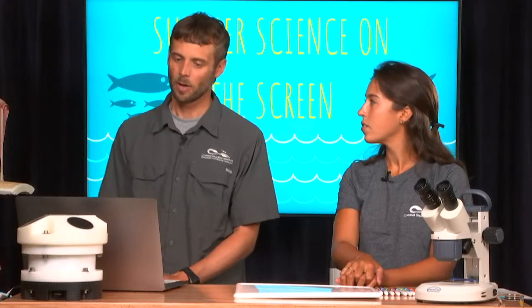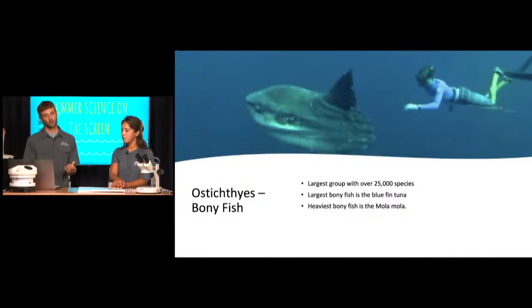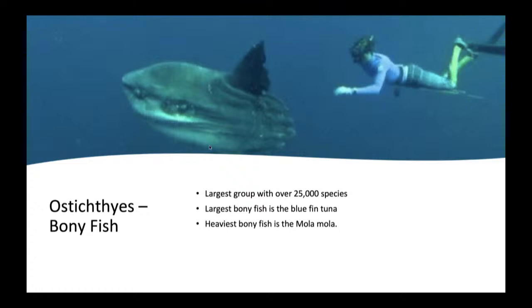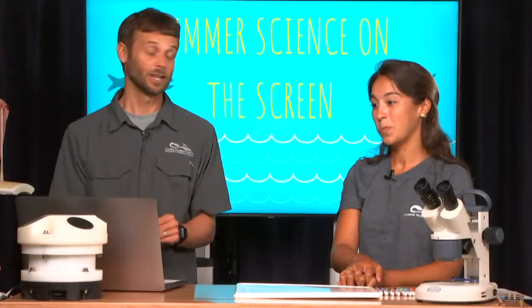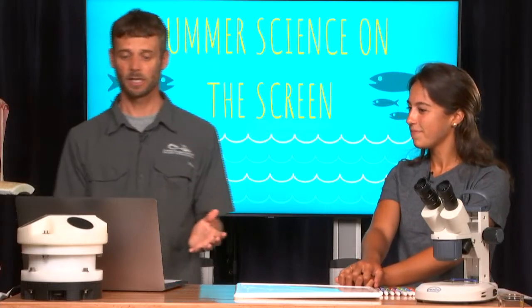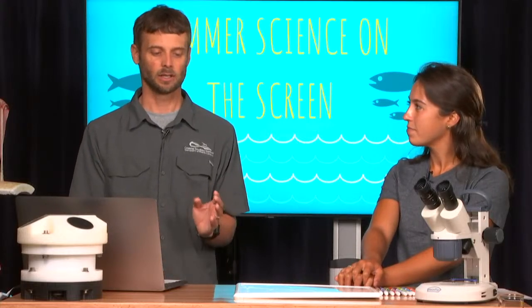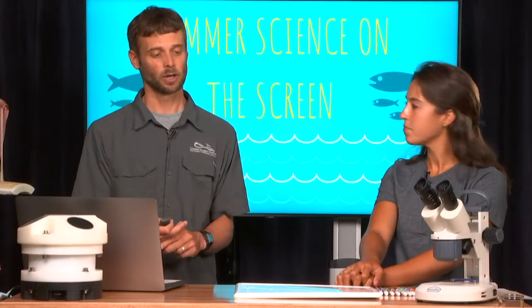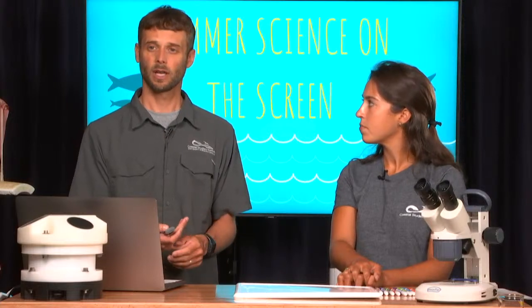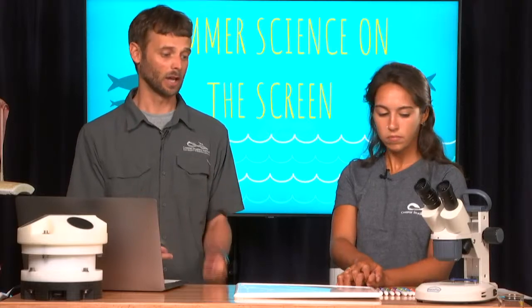Lastly, we want to talk about our bony fish, or Osteichthyes — our largest group, with about 25,000 different species. The largest bony fish is the bluefin tuna, but the heaviest is the mola mola — that's actually me in the picture swimming with a mola mola right off the coast here, only about seven or eight miles out. Mola mola eat primarily jellyfish, even to get that big. To really talk about our bony fish, we're going to draw one piece by piece, talking about each piece and adaptation. We encourage you to do that as well — none of our fish will look the same, and the fish we draw is going to be a Frankenstein combination of all the different parts.